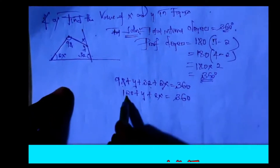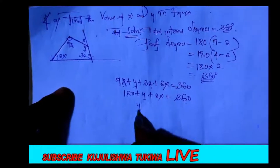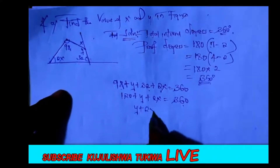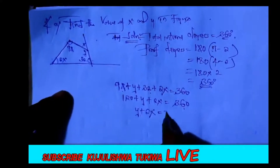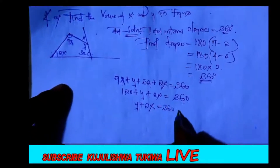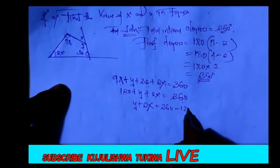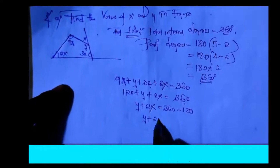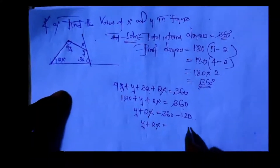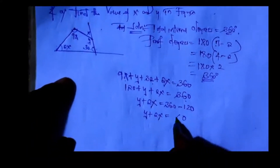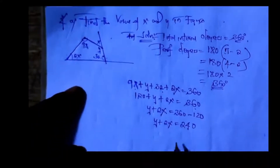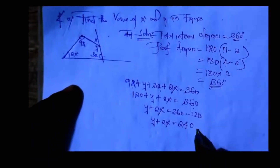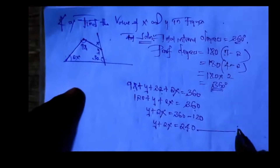So after combining like terms — 98 plus 32 equals 130 — we get Y plus 2X equals 230. This is equation number 1.